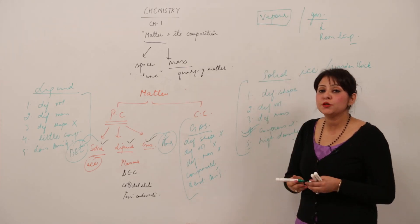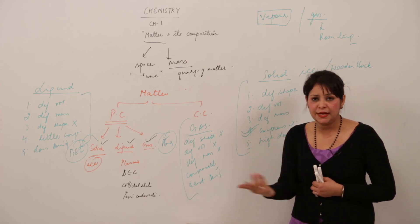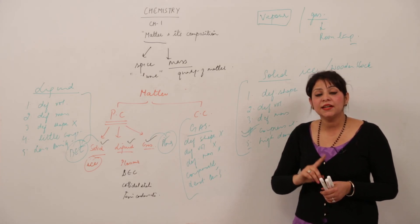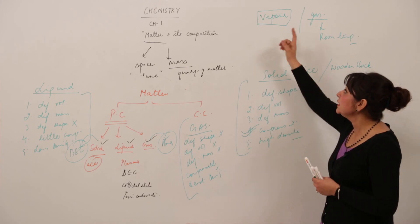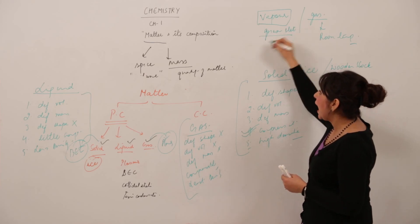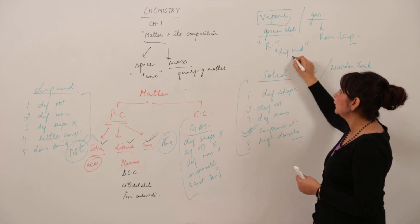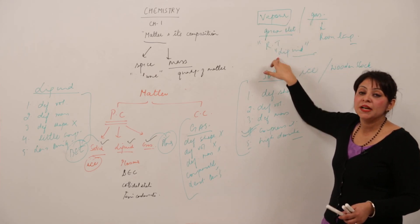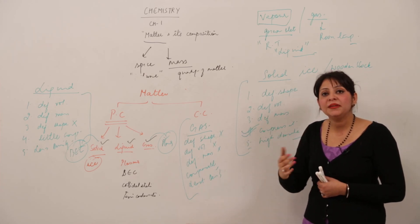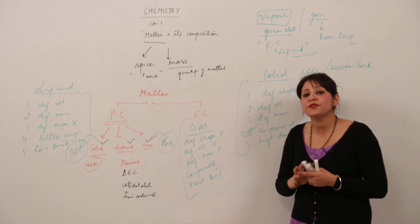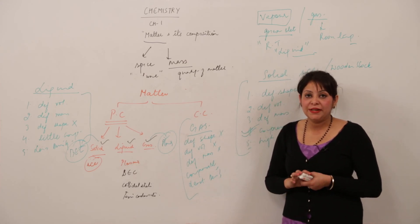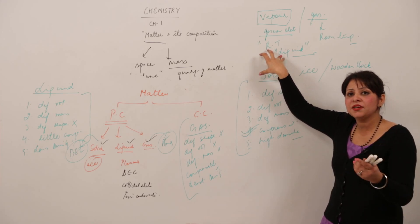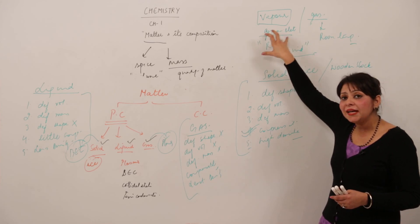Vapor, on the other hand, refers to a substance whose actual state at room temperature is liquid, but when you heat it above room temperature, it converts into a gaseous state — and that gaseous state is called vapor. So: gas exists as gas at room temperature, while vapor exists as liquid at room temperature but becomes gaseous when heated.